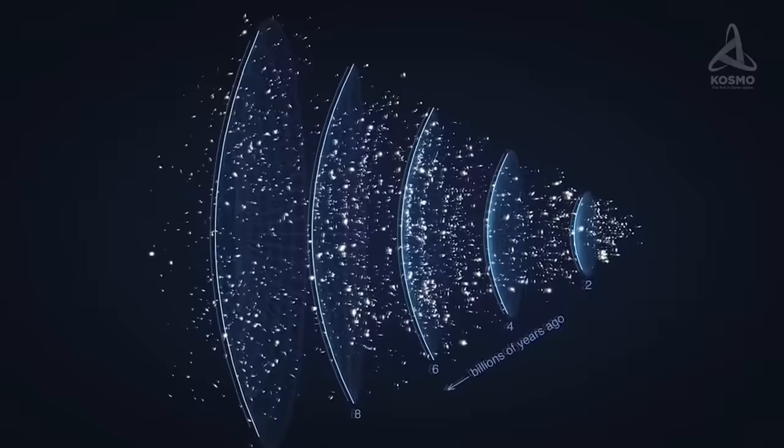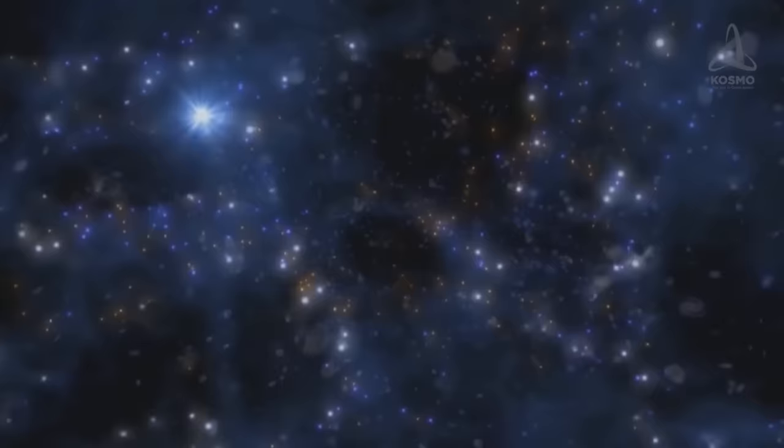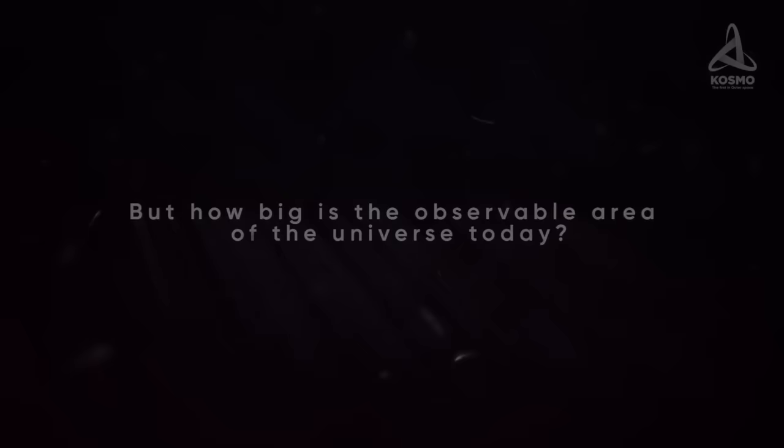The objects on the horizon become infinitely red-shifted, that is, they constantly move further away. The number of galaxies within the observable Universe is estimated at upwards of 500 billion, with this number increasing on a regular basis as the research equipment becomes more advanced. But how big is the observable area of the Universe today?